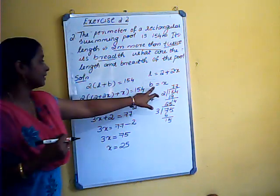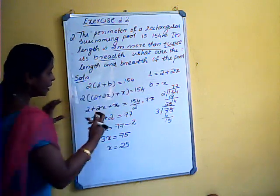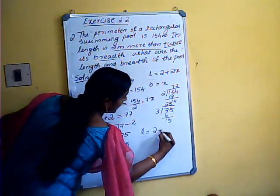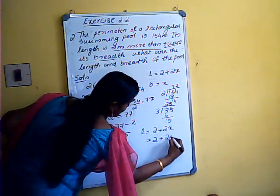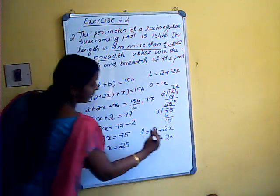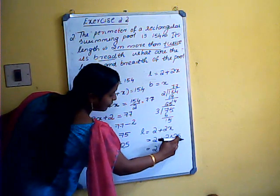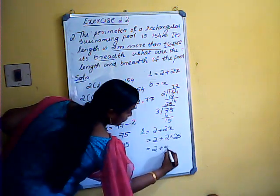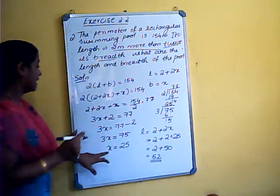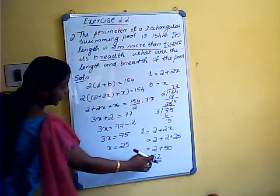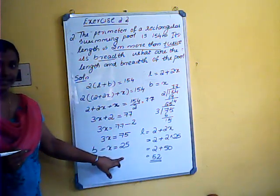Breadth is 25. Now for length: length equals 2 plus 2x, which is 2 plus 2 times 25, giving 2 plus 50 equals 52. Therefore length is 52 meters and breadth is 25 meters.